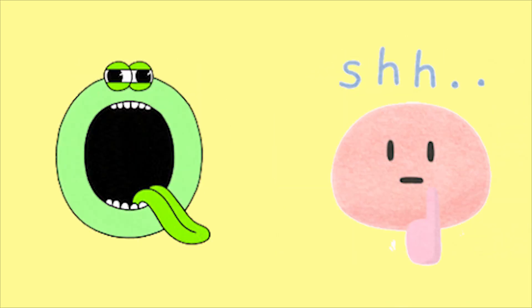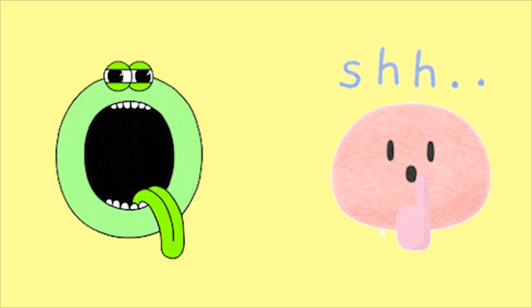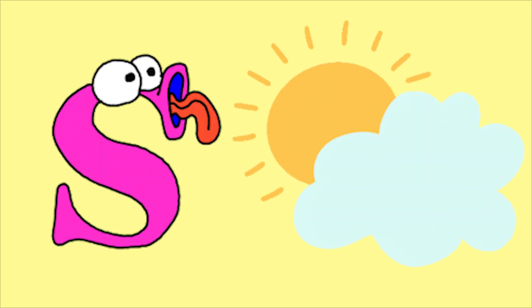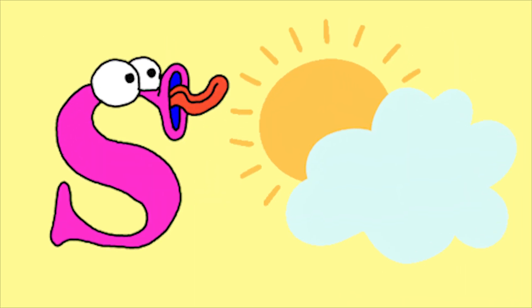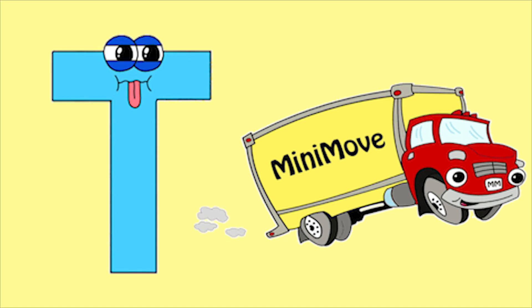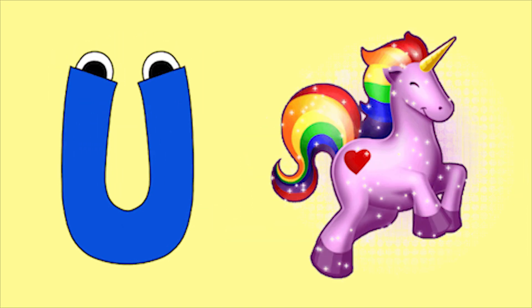Q for quiet, R for rose, S for sun, T for tub, U for unicorn.